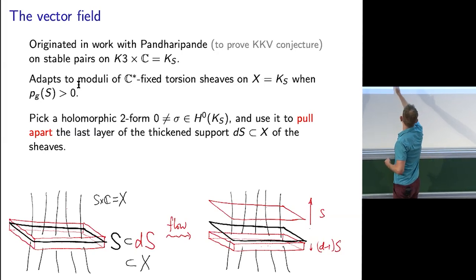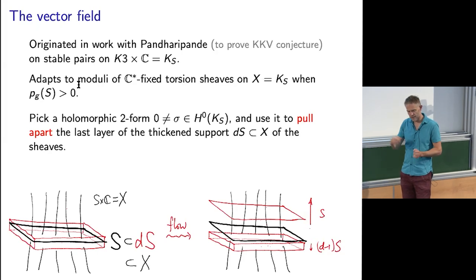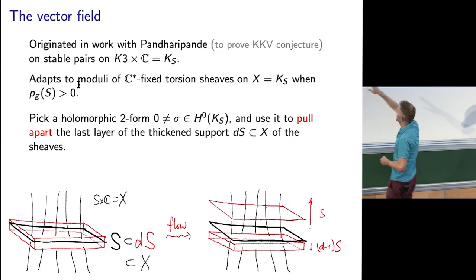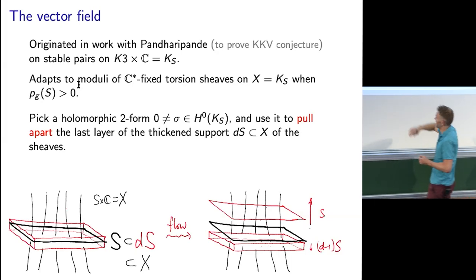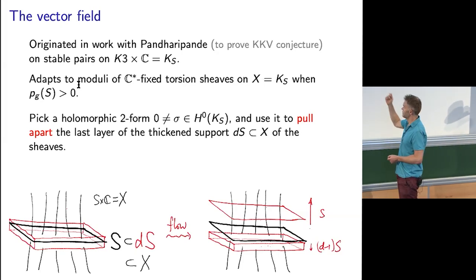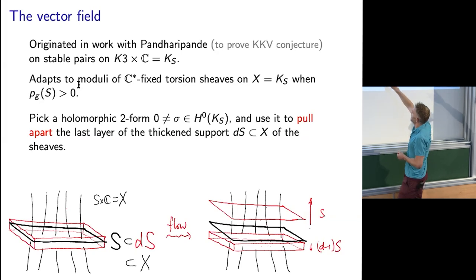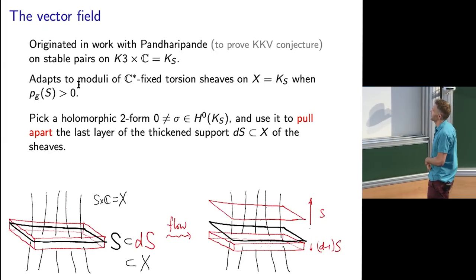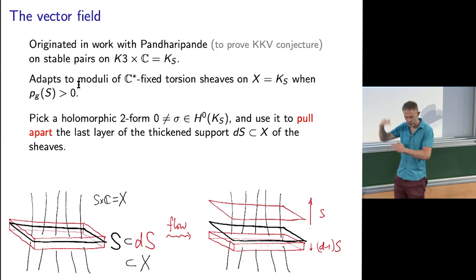There's a beautiful picture. We have a torsion sheaf on a thickening of the surface, and we're going to flow to other points of moduli space and take the derivative — that gives us a vector field on moduli space. The flow: you pick off the last layer, so the bit annihilated by z (the coordinate of the fibre, the maximal ideal). You send that up the fibres by taking the graph of sigma or t times sigma as t runs through the complex numbers. Then the rest flows down a little bit slower to maintain the centre of mass zero condition.